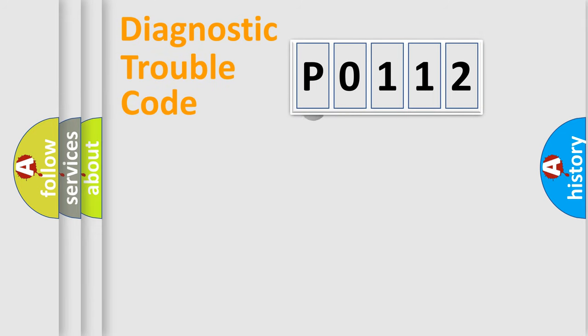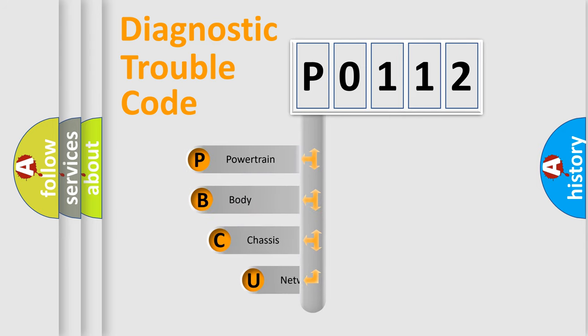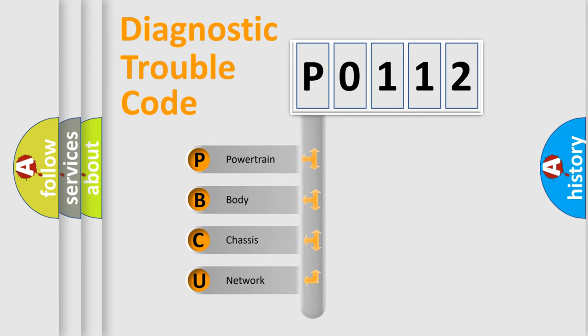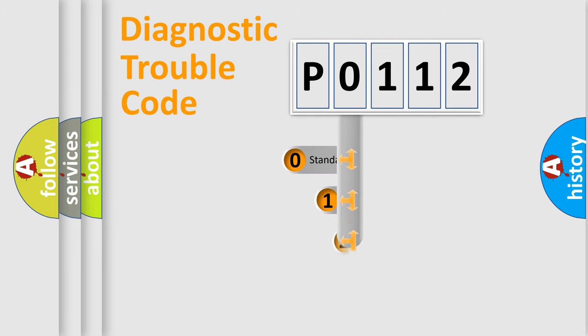First, let's look at the history of diagnostic fault code composition according to the OBD-2 protocol, which is unified for all automakers since 2000. We divide the electric system of an automobile into four basic units: Powertrain, Body, Chassis, and Network. This distribution is defined in the first character of the code.